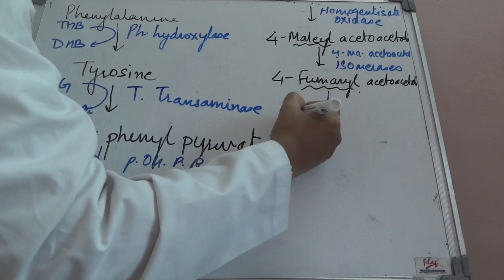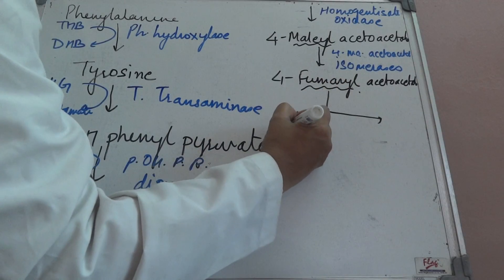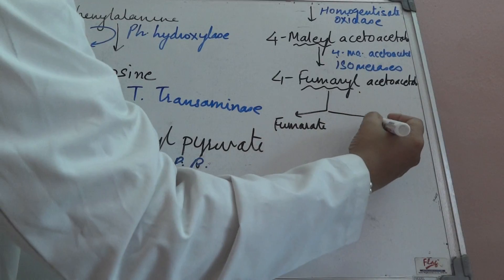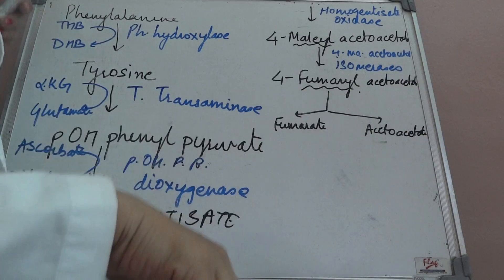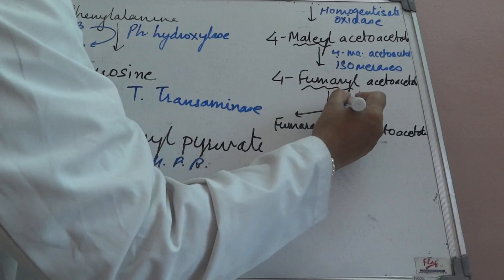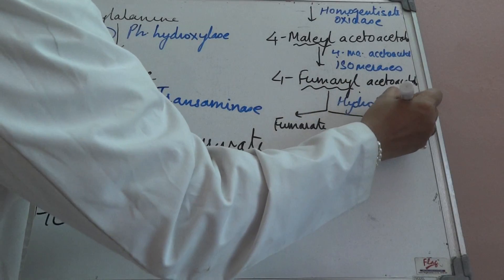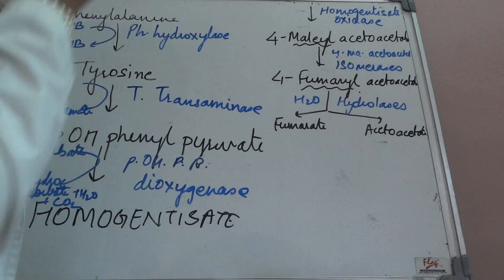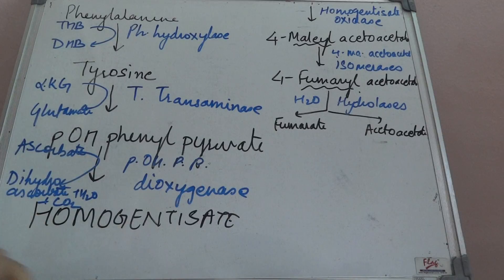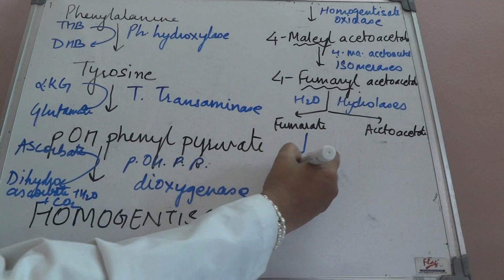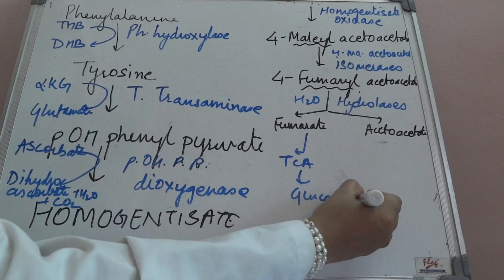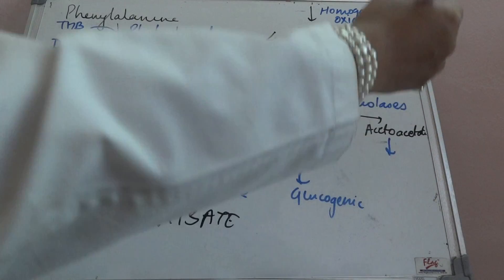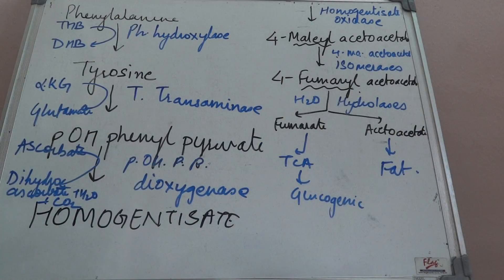Now we require a split in this reaction because we have to justify that it goes to glucose as well as lipid metabolism. Because we are splitting it, there is a hydrolysis reaction through a water molecule. This fumarate can enter the TCA cycle, justifying that tyrosine is a glucogenic amino acid. And acetoacetate will enter fat metabolism, justifying that it is a ketogenic amino acid.